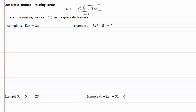In our first example, notice that we have the equal sign and that our 2x term is on the other side from our squared term. We want to move that over by subtracting 2x from both sides, so we now have 5x squared minus 2x equals zero.